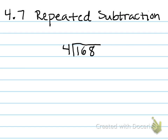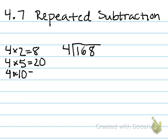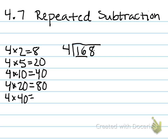4.7, repeated subtraction. This is the strategy where you list some multiplication problems on the side and use those to keep subtracting until you get to 0 or your remainder. On the side I might list: 4 times 2 is 8, 4 times 5 is 20, 4 times 10 is 40, and 4 times 20 is 80. Looking at my dividend, none of those are really close to 168. So I think about the greatest two places — 4 times what gives me 16? 4 times 4. So what gets me close to 168? It would be 4 times 40.